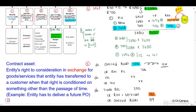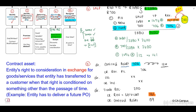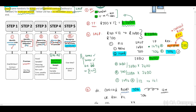The contract asset is the entity's right to consideration in exchange for goods or services transferred to a customer, when that right is conditioned on something other than the passage of time — therefore a future performance. The entity will only be able to receive all of the income relating to that asset at the end of the 12-month period. This is a very basic example — please refer back to our lecture notes.